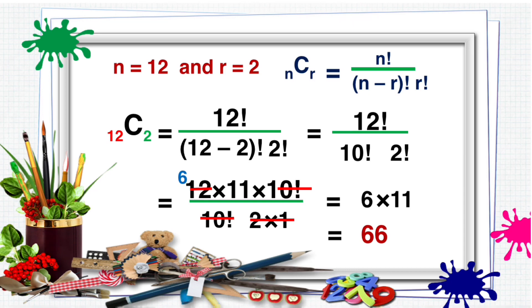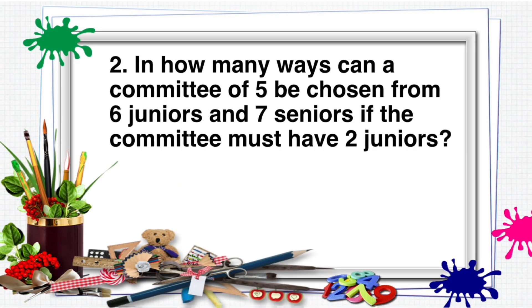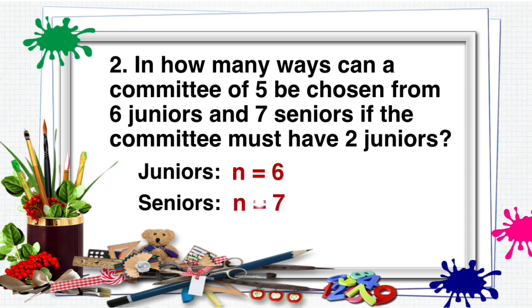How about item number 2? In how many ways can a committee of 5 be chosen from 6 juniors and 7 seniors if the committee must have 2 juniors? Identify the values of N: for juniors, N is equal to 6, and for seniors, N is equal to 7. We need to form 5 committee members and there must be 2 juniors, so there must be 3 seniors.